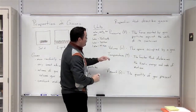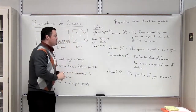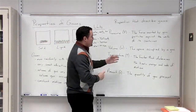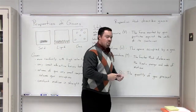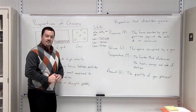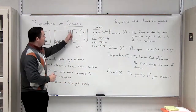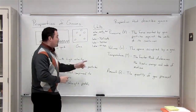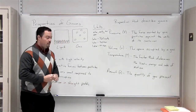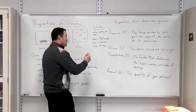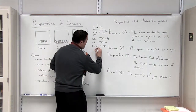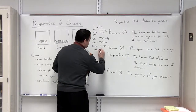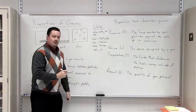One of the other properties that we use to describe gases is volume. Volume is simply the space occupied by the gas — it's the total amount of space that the gas takes up. The units we use to measure volume: sometimes you will see the volume of a gas measured in milliliters, and other times you will see it measured in liters.